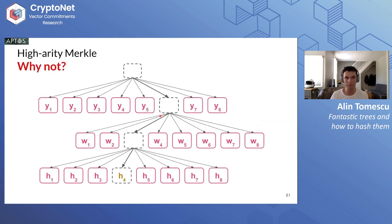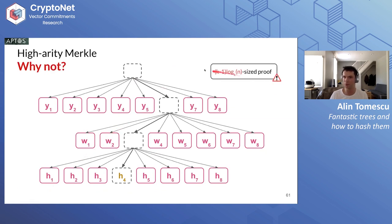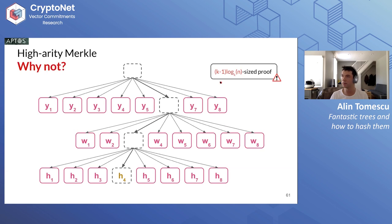Why not just use a high-arity Merkle tree instead of a Verkle tree? If you want to prove H4, you'd give all siblings at every level: log_K(n) levels with K−1 siblings per level, giving proof size (K−1)·log_K(n), which is always greater than log_2(n) from a binary tree. So high-arity Merkle doesn't optimize proof size. But if your goal is database efficiency, it might make sense — with K=16, the proof is only about four times larger, which could be acceptable in practice.